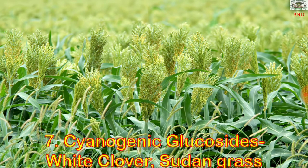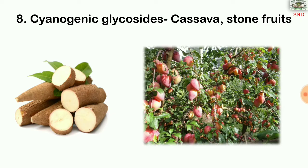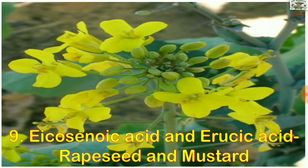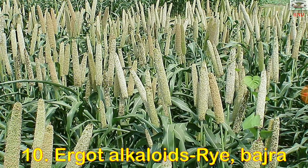Cyanogenic glucosides are in white clover and sudangrass. Cyanogenic glycosides are also in cassava and stone fruits. Eicosenoic acid and erucic acid are in rapeseed and mustard. Ergot alkaloids are in rye and bajra.